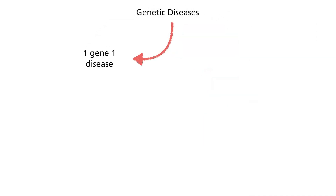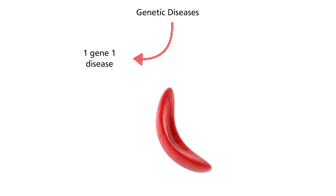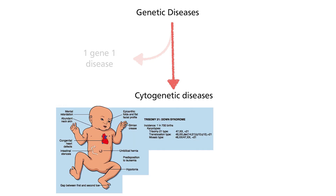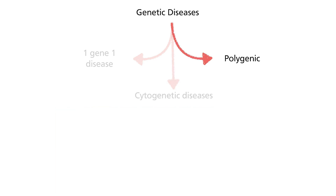Genetic diseases can generally be grouped into three: the one gene, one disease group, where sickle cell anemia is the prototypical example. The second group is known as the cytogenetic diseases, which involves chromosomal aberrations, and the most famous is Down syndrome. The last group of genetic diseases are polygenic, meaning they involve multiple genes, and cancer is one such example.